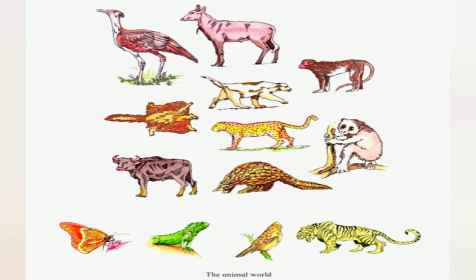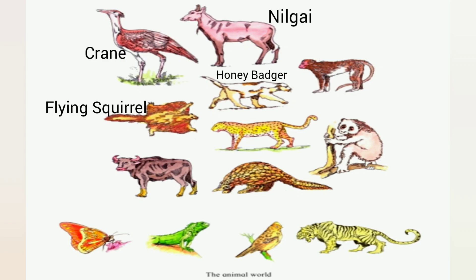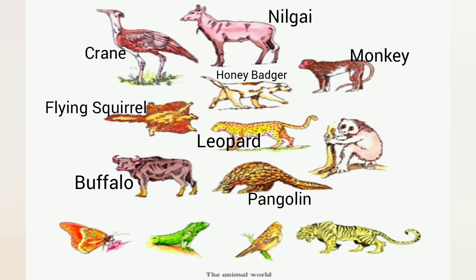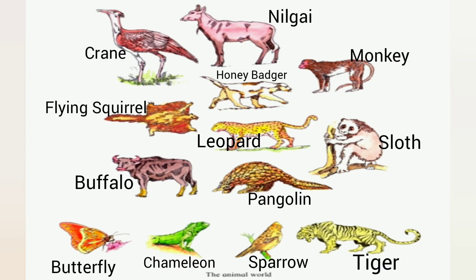In your textbook, a picture of the animal world is given. In this picture, we can see a crane, nilgai, flying squirrel, honey badger, leopard, monkey, buffalo, pangolin, sloth, butterfly, chameleon, sparrow, and tiger. So all these are included in the animal world.